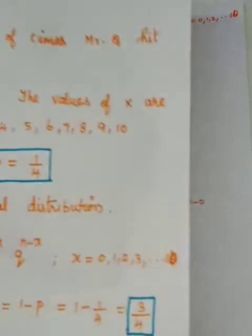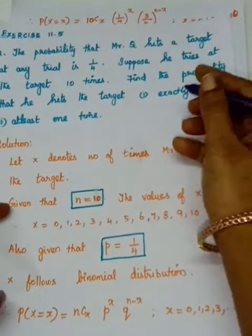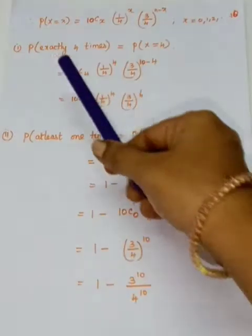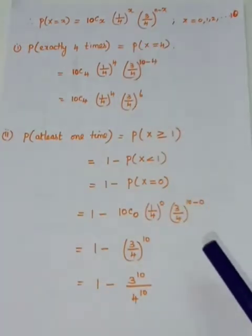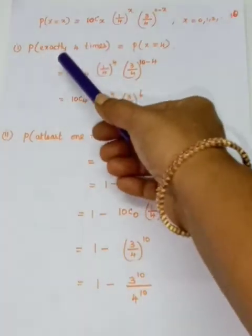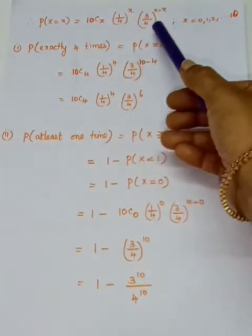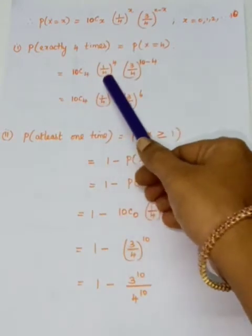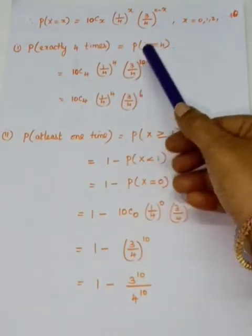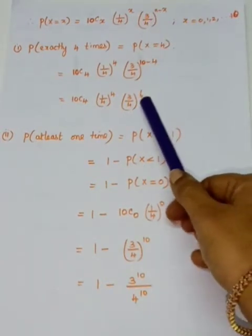For the first subdivision: the probability that he hits the target exactly 4 times. The word 'exactly' means we need P(X = 4). In the probability mass function, substitute X = 4: it is 10C4 · (1/4)^4 · (3/4)^(10−4), so (3/4)^6.